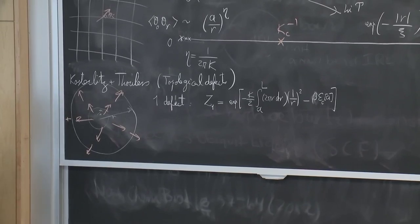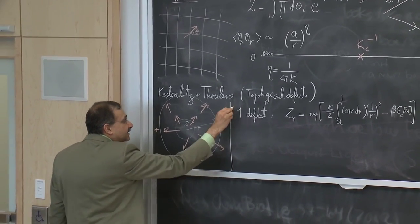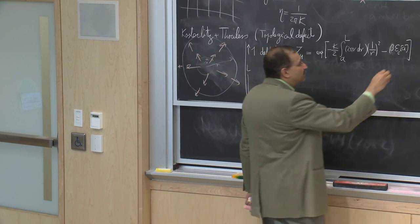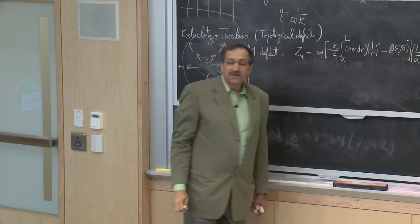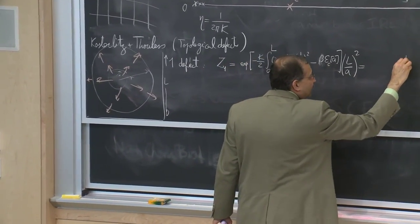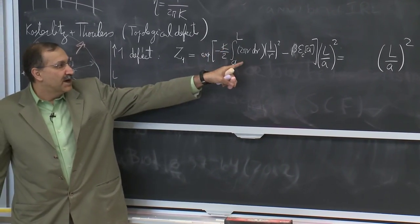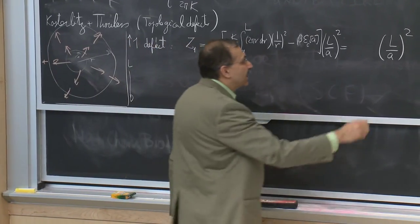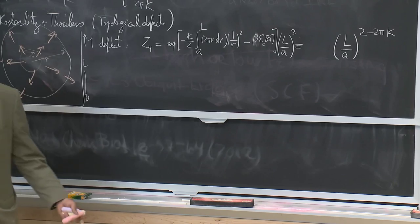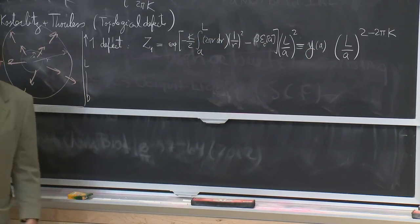This is the energy term that goes into the Boltzmann factor. But this defect can be placed anywhere in a lattice of size l, with core size a, so the number of places goes like (l over a) squared. The partition function for one defect then goes like (l over a) to the power 2 minus 2 pi k log(l over a). Absorbing the core energy into a parameter y that depends on the choice of core, we see that Z of one defect scales as (l/a)^(2 - 1/pi*k) times y.